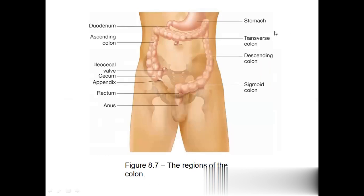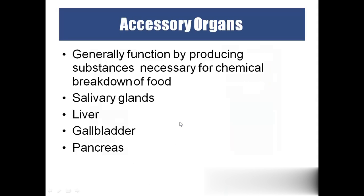In this picture you can see the stomach, duodenum, ileocecal valve, cecum, appendix, ascending colon, transverse colon, descending colon, sigmoid colon, rectum, and anus. Salivary glands, liver, gallbladder, and pancreas are the accessory organs; together with the GIT they form the complete digestive system.